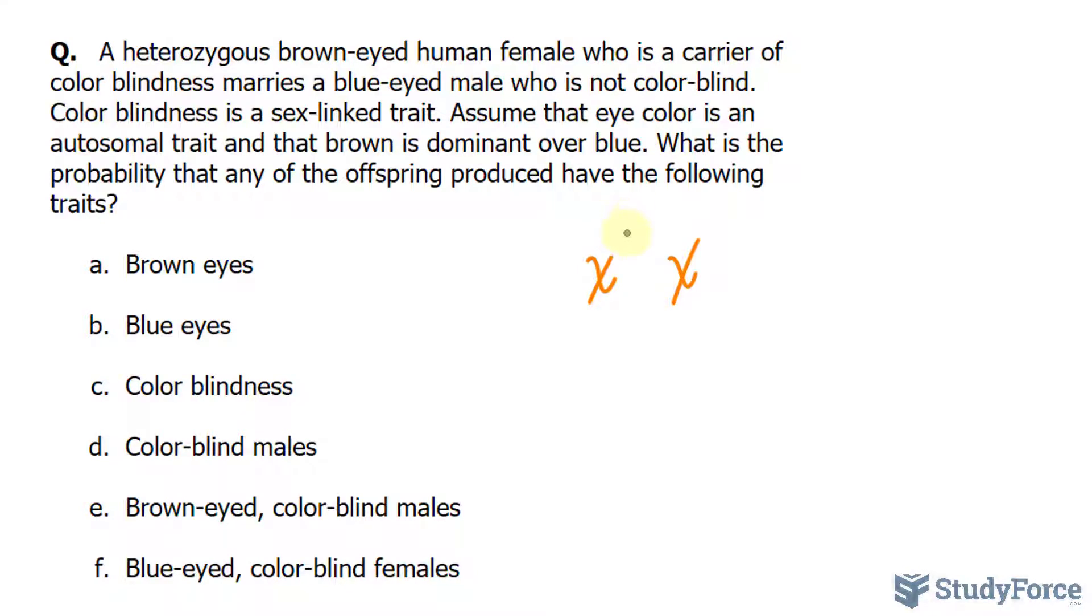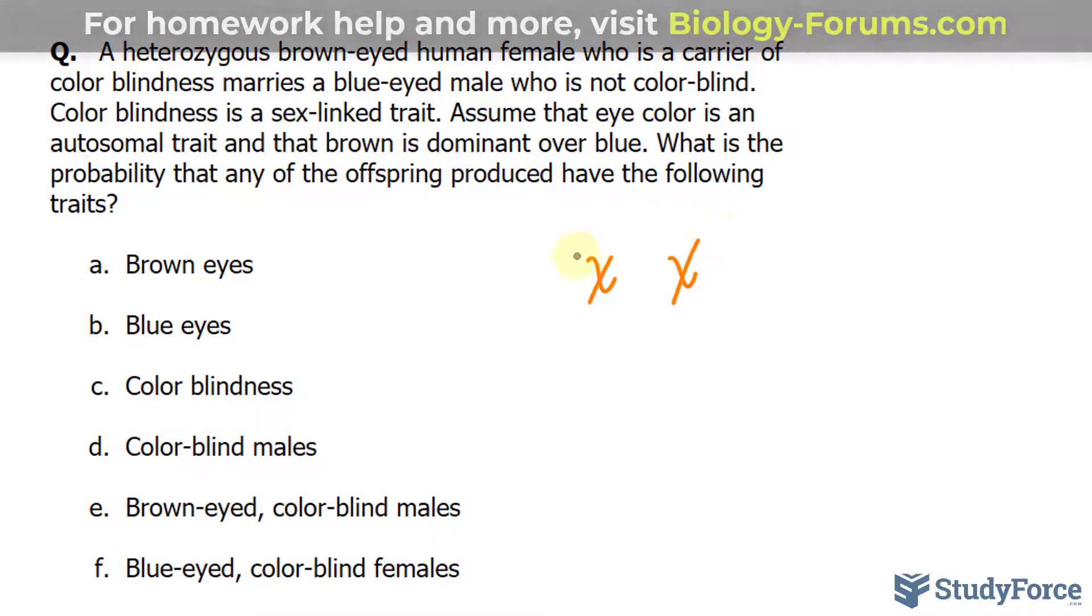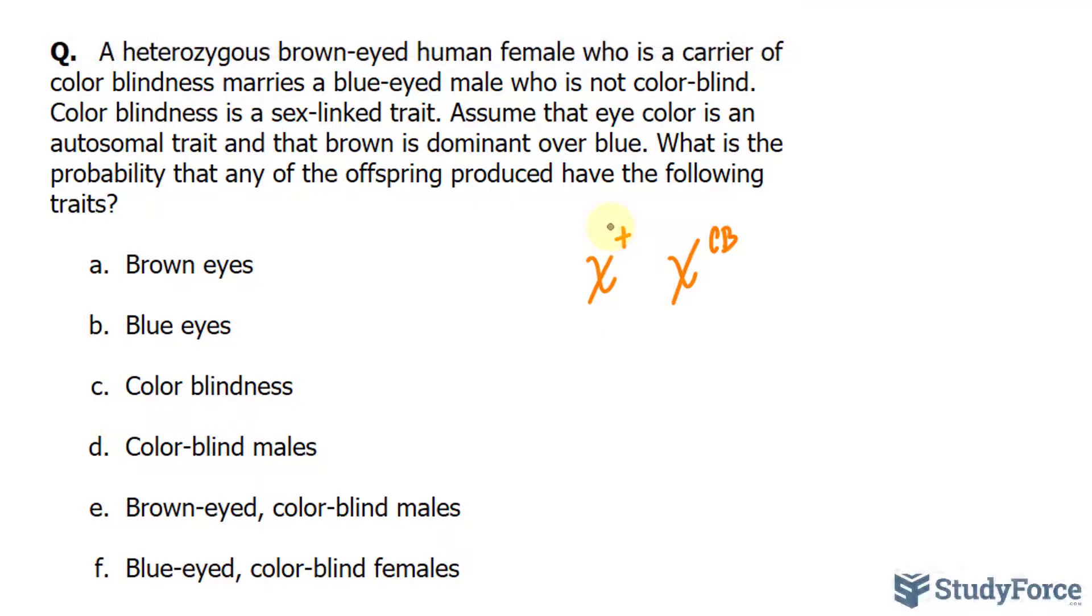With that being said, we'll display the allele on this X chromosome. It doesn't matter which one you display it on. I'll call the allele CB for colorblindness. And the other allele that occupies the other X chromosome, I'll write it down as plus. This is the normal allele for this trait where there's no colorblindness.